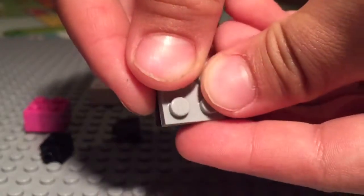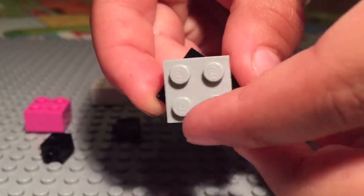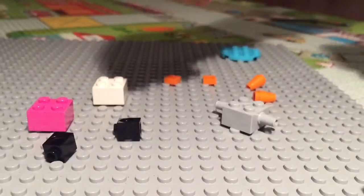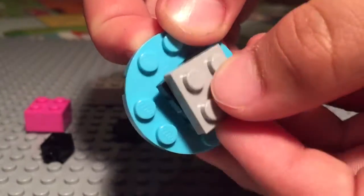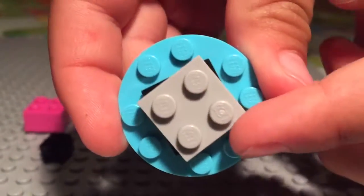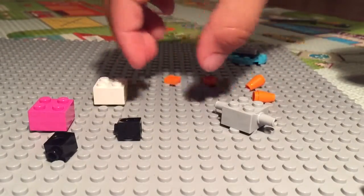Then you get this thing and put this bit on top like this so it spins around. Set that aside. Then you get this bit with this bit and put them together like that.